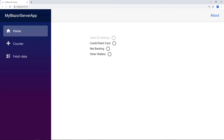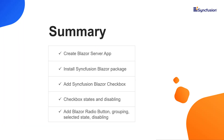If you need more information about Syncfusion Blazor checkbox and radio button components, refer to our online documentation. A link is provided in the description of this video. Finally, let me summarize the main points. I have explained the steps to create a Blazor application and add the Syncfusion Blazor package.